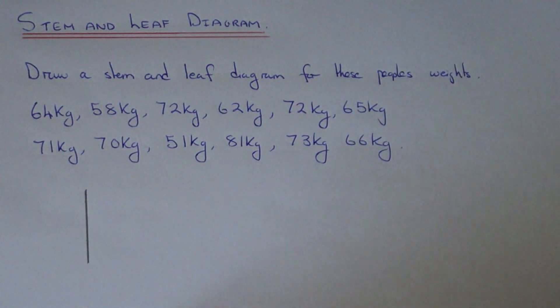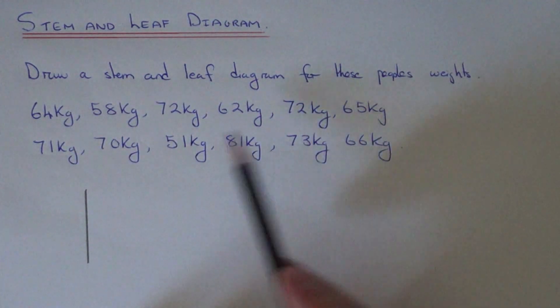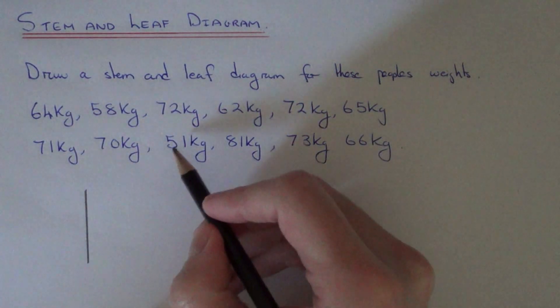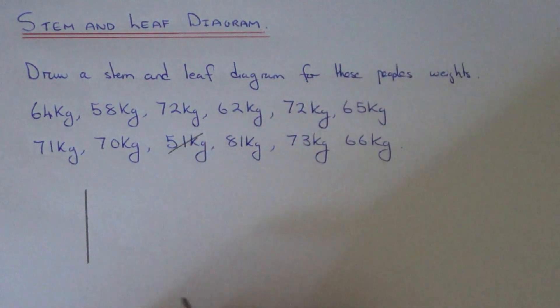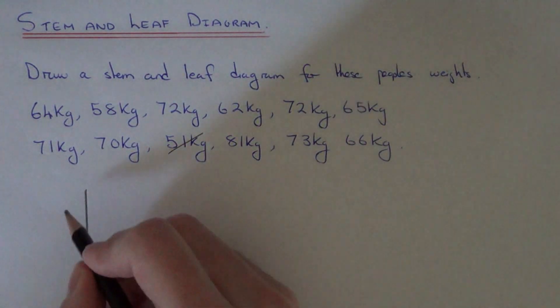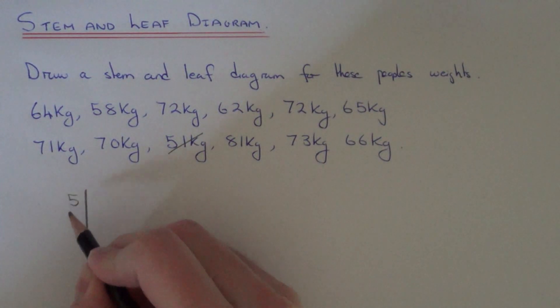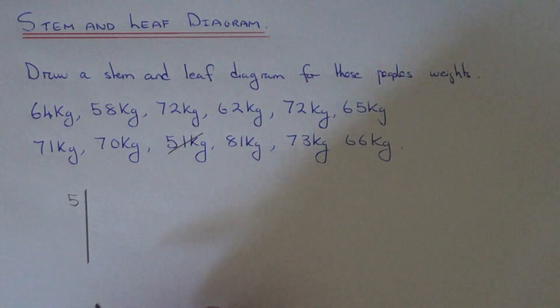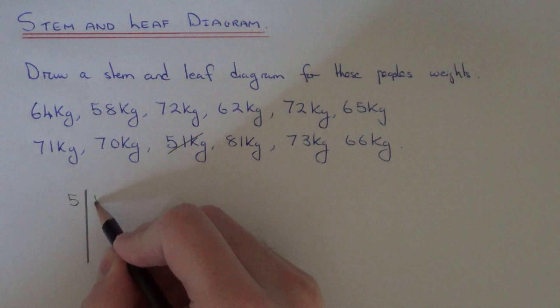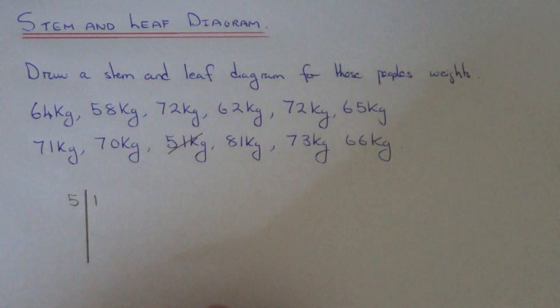We need to start off with the lowest weight. So scan through the data. Our lowest weight seems to be 51 kilograms. So to record 51, we put a 5 on the left hand side of the line and we put the 1 on the right hand side.